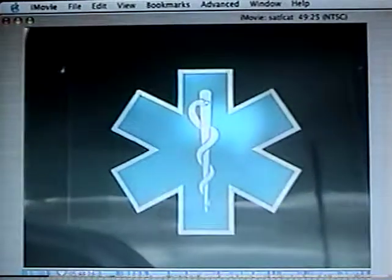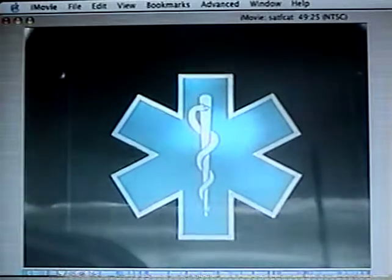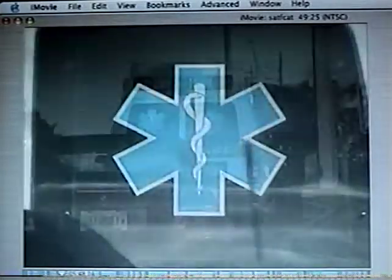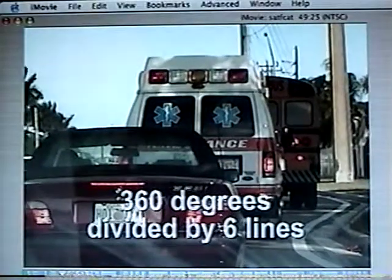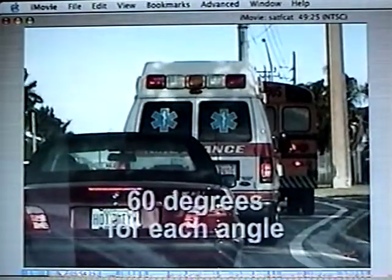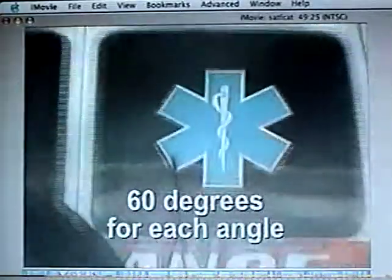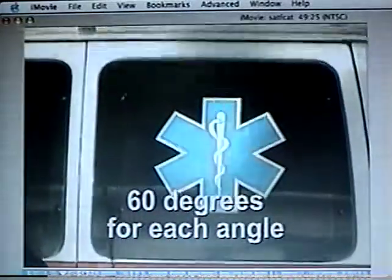What's the average degrees between each of those lines? 360 degrees divided by 6. Each one of those is 60 degrees each angle.